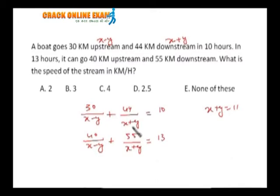But if I put x plus y as 11 here, I'll be getting 4. So 30 upon x minus y will be 6. In that case, x minus y has to be 5.